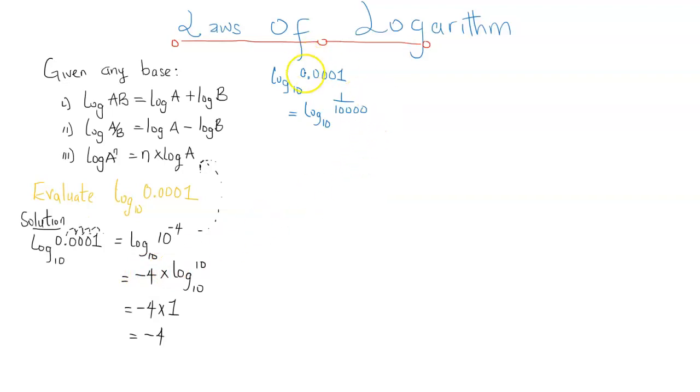By shifting the decimal points, this is going to be 1 over 10,000. So, relying on the second law, we can see that a is 1, the numerator, and b is 10,000, that's the denominator. So if we apply the second law, log a over b equals log a minus log b.